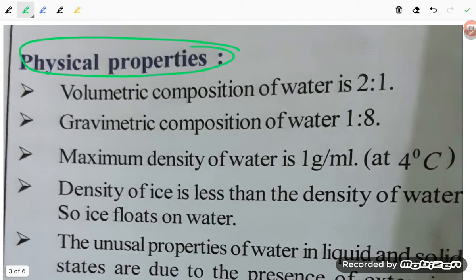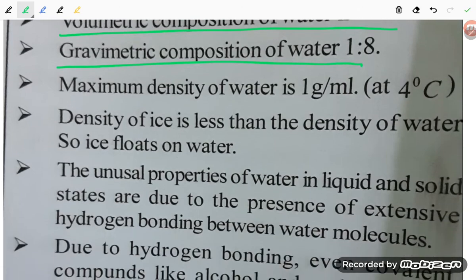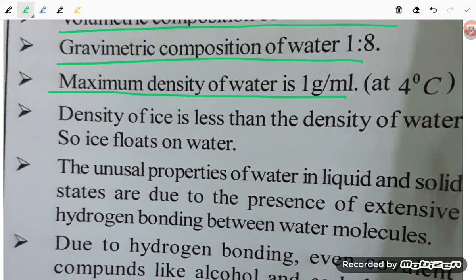Now the physical properties of water. Volumetric composition of water is two ratio one. Gravimetric composition of water is one ratio eight. Maximum density of water is one gram per milliliter at four degree Celsius.